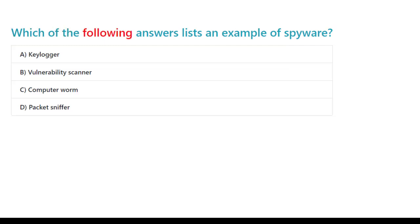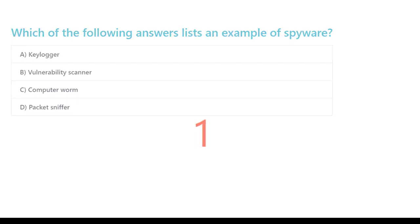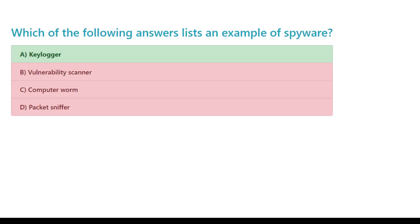Which of the following answers lists an example of spyware? A. Keylogger. B. Vulnerability scanner. C. Computer worm. D. Packet sniffer. The correct answer is A. Keylogger.